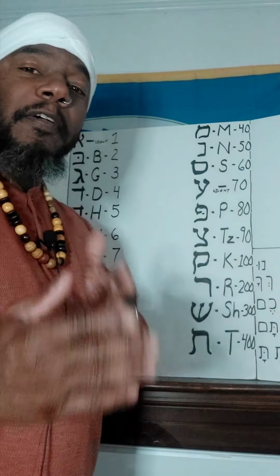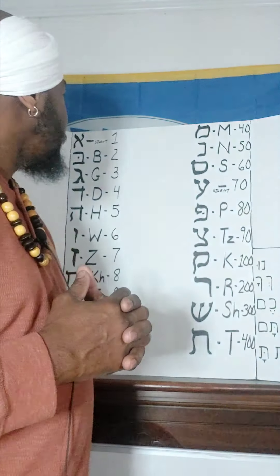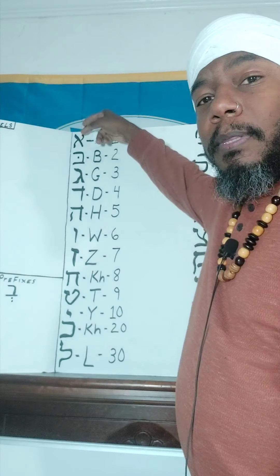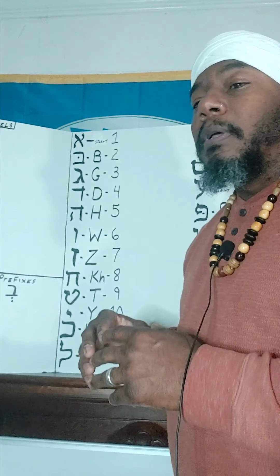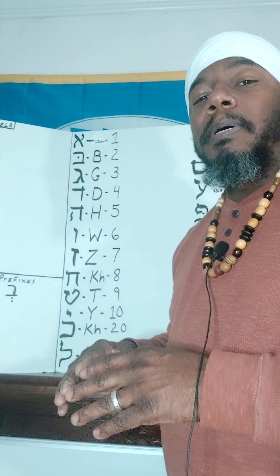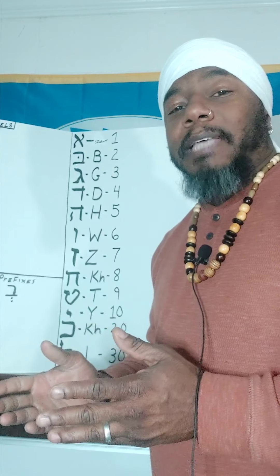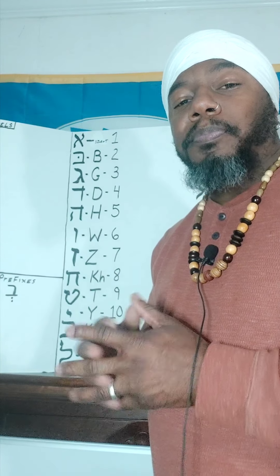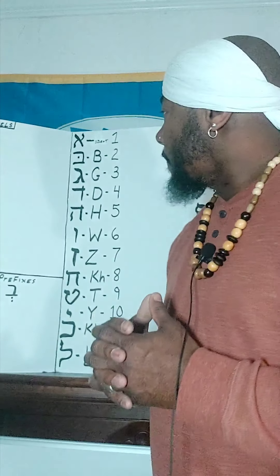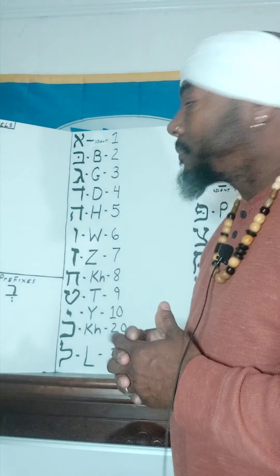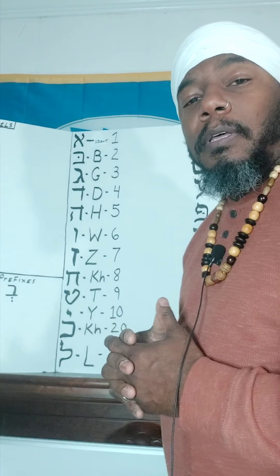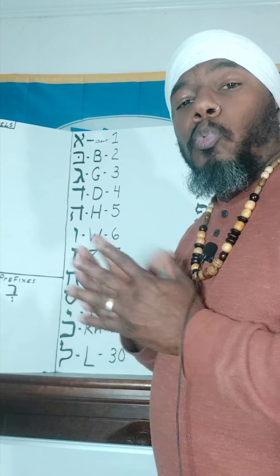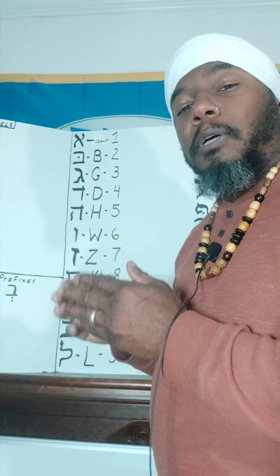So, let us start with the very first letter of the Hebrew, or the Ebrite. This letter here is the Olive. Some say it has the A sound, but according to how I have been taught, the Olive is silent. The Olive is the first letter of the Hebrew alphabet. It carries a numerical equivalent to the number one.